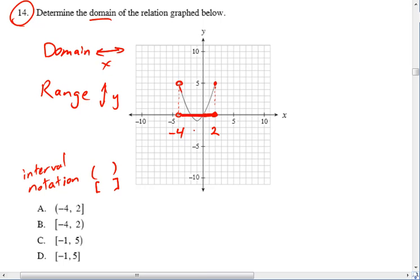Normally we would express it as a set of x values that are less than or equal to two and greater than negative four. This is our domain, but how can we say that in interval notation?